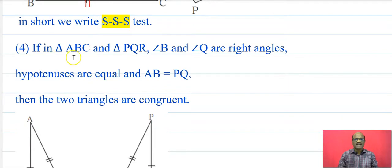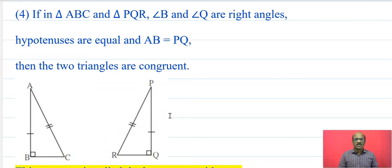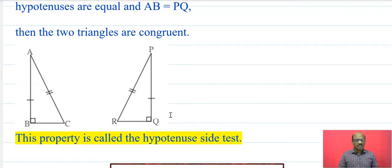Next, in triangle ABC and triangle PQR, angle B is congruent to angle Q, which are the right angles. Side AB is congruent to side PQ, and the hypotenuse AC is congruent to hypotenuse PR. Therefore these two triangles are congruent by the hypotenuse-side test. This property is known as the hypotenuse-side test, written as the HS test.